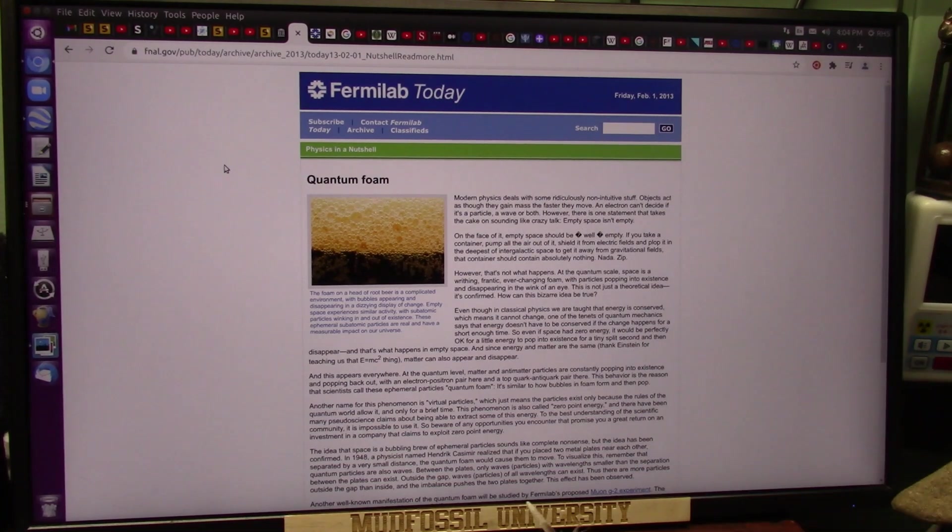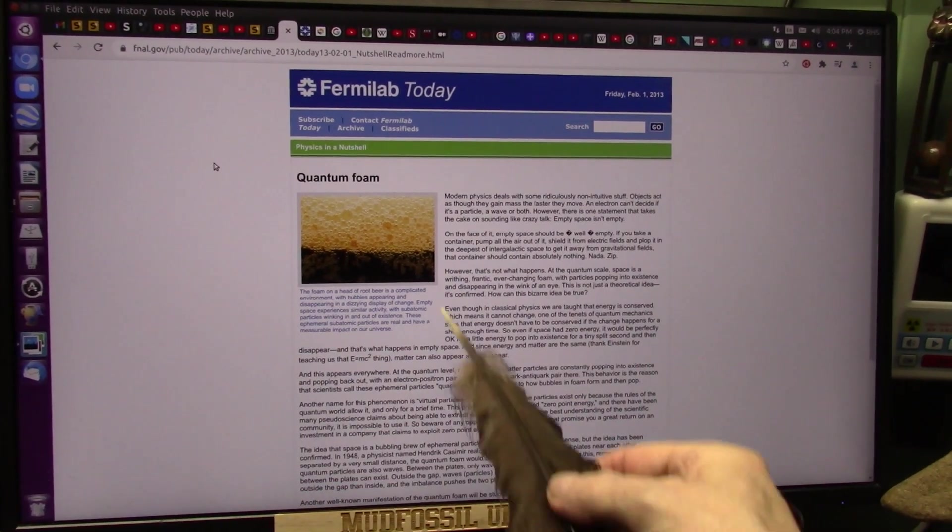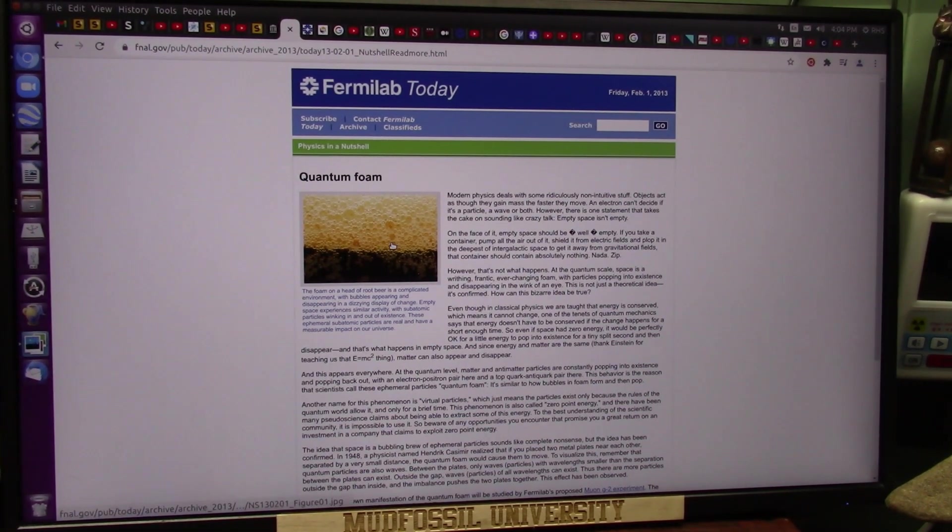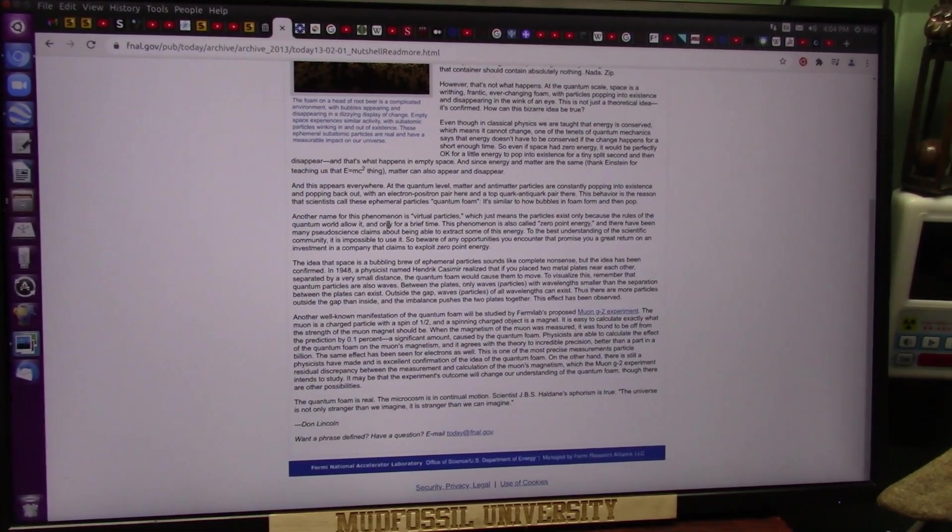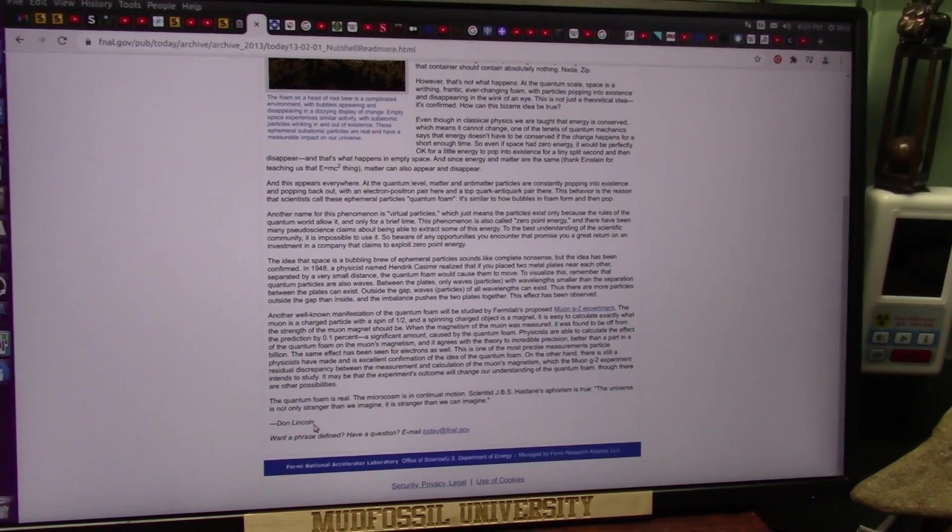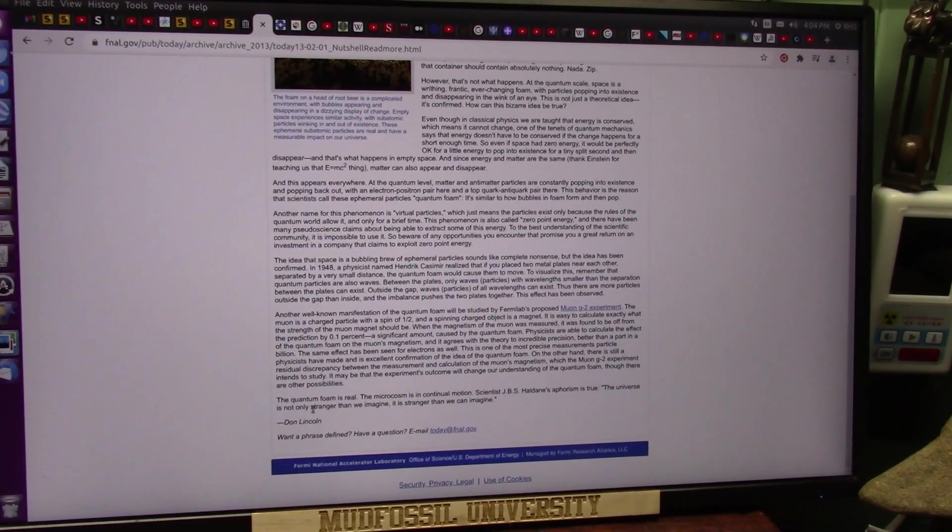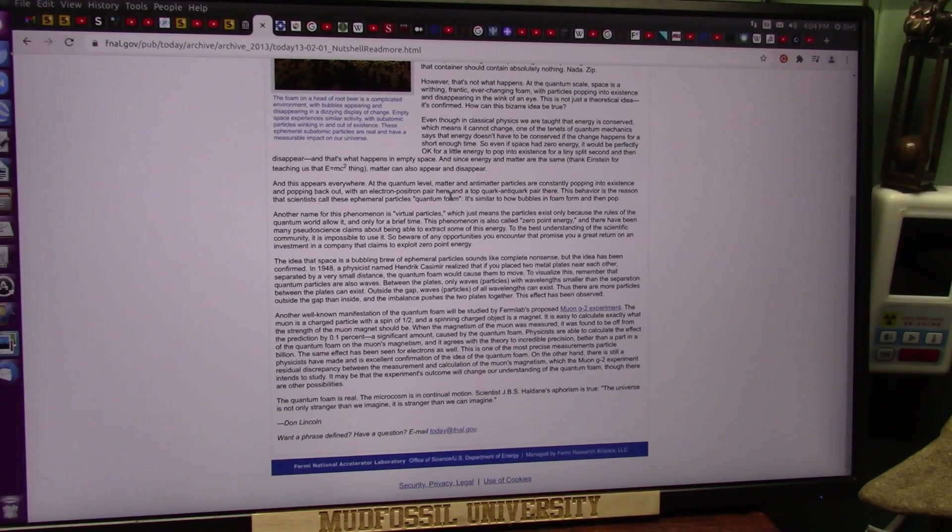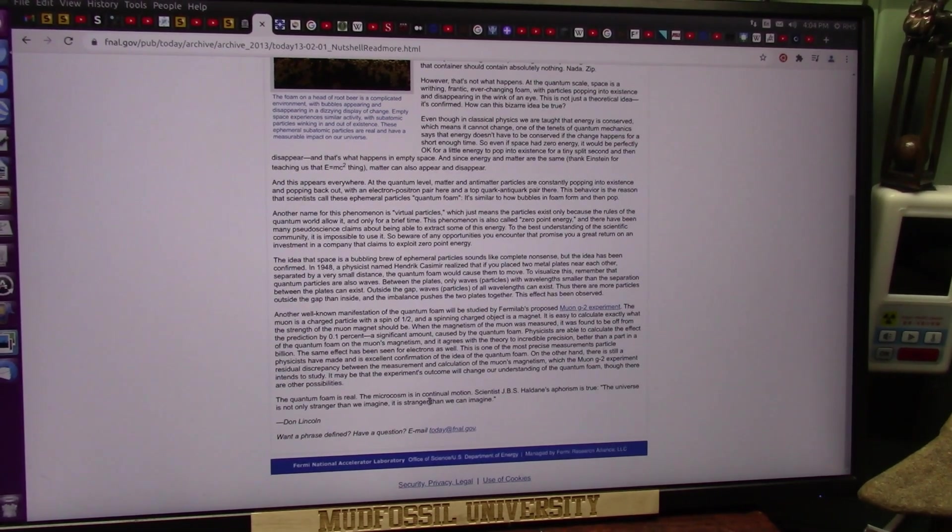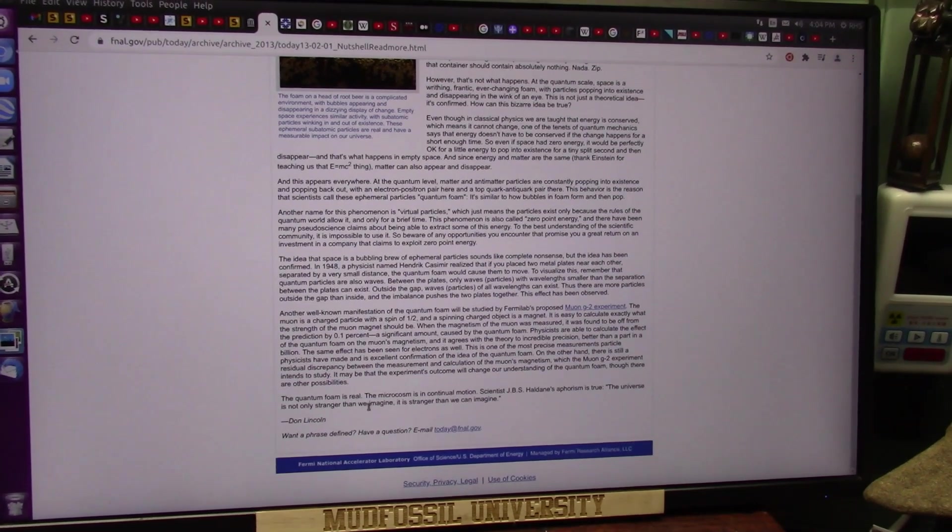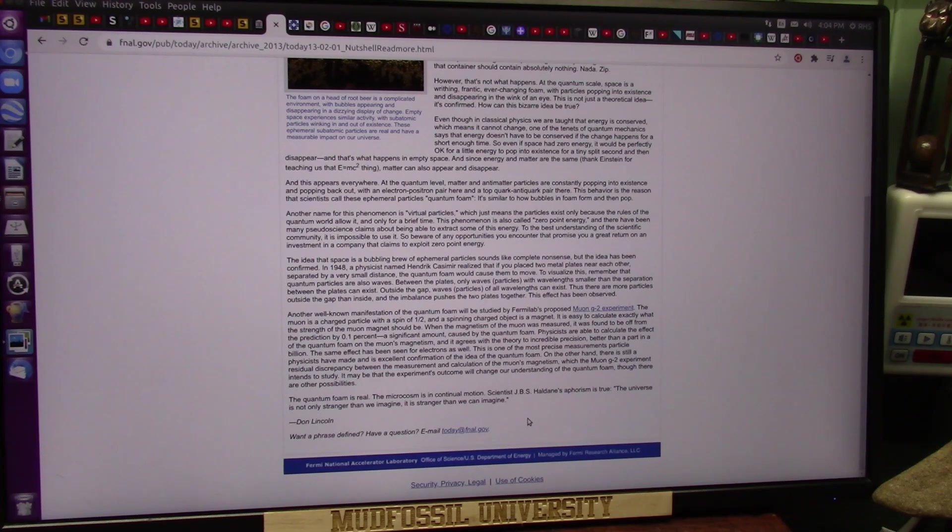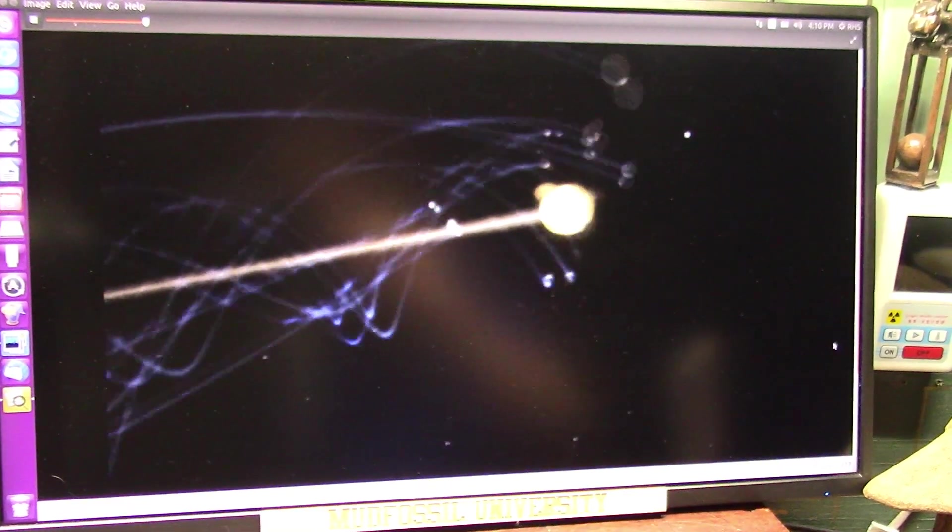Now, Fermilab, all of them know that the whole space is saturated with this quantum foam, they call it. I can't imagine how they think it has no effect on the things scrubbing through it. This is Don Lincoln from Fermilab, seven, eight, nine years ago. The quantum foam is real. And he says it's everywhere. There's no escaping it. It's everywhere in the universe. The microcosm is in continual motion. The universe is not only stranger than we imagine, it is stranger than we can imagine. That is a fact.